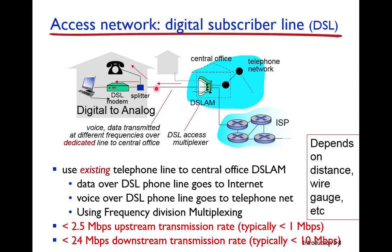Three channels are defined using frequency division multiplexing, which we will study in a later chapter. DSL can support different data rates depending on distance and wire gauge, but typically supports up to 2 Mbps upstream and up to 24 Mbps downstream. Since upstream and downstream rates are different, DSL is called asymmetric.